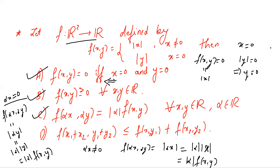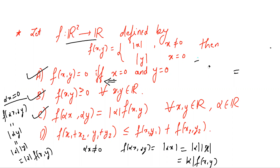The fourth option says that f(x1 + x2, y1 + y2) ≤ f(x1, y1) + f(x2, y2). Proving or disproving this statement might take some work, so we consider a specific example to check whether this statement is true.